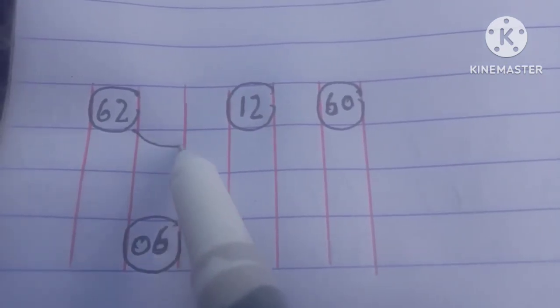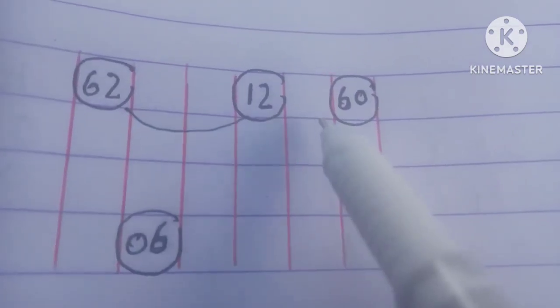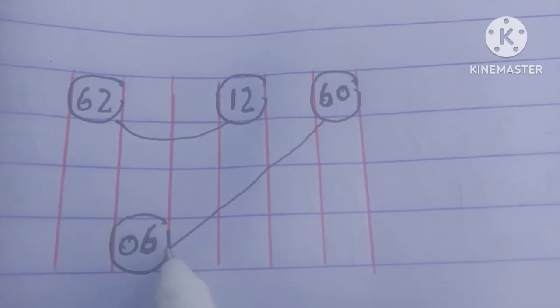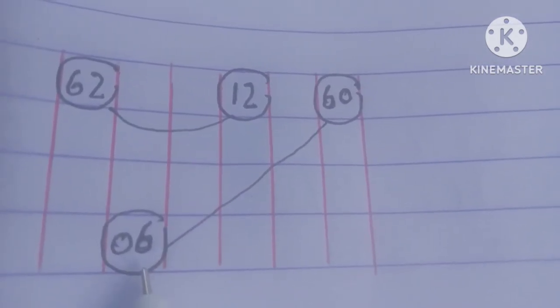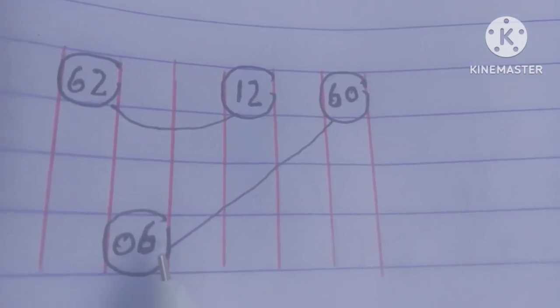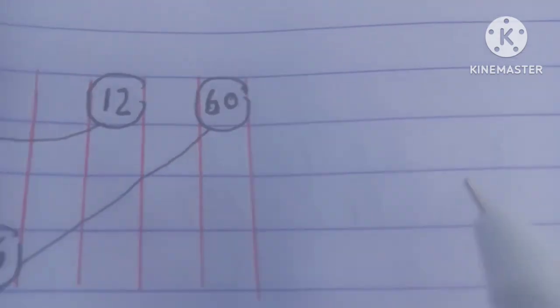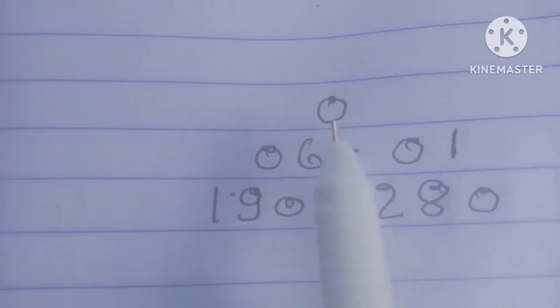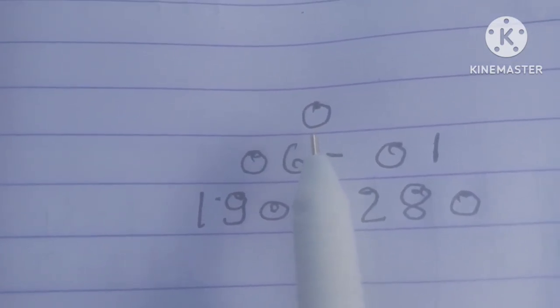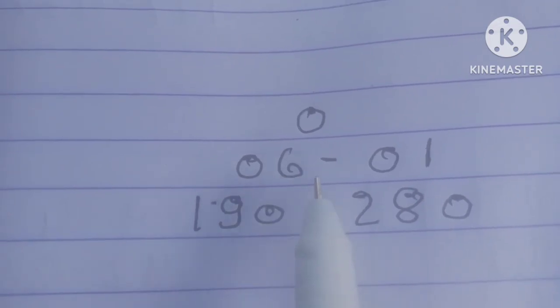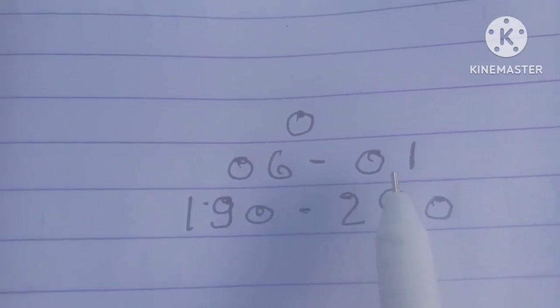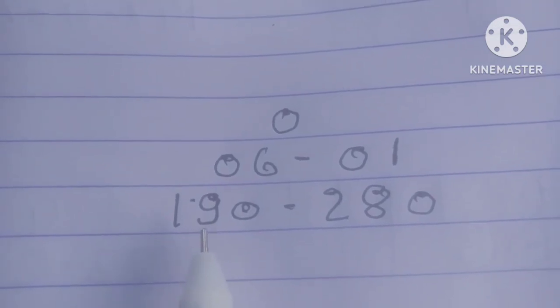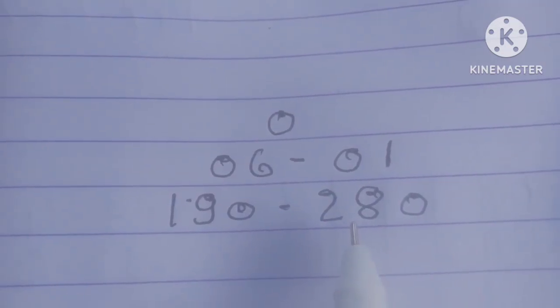This is the first round. First round should be 06. Single round 06-01. Strong panel 190, 280.